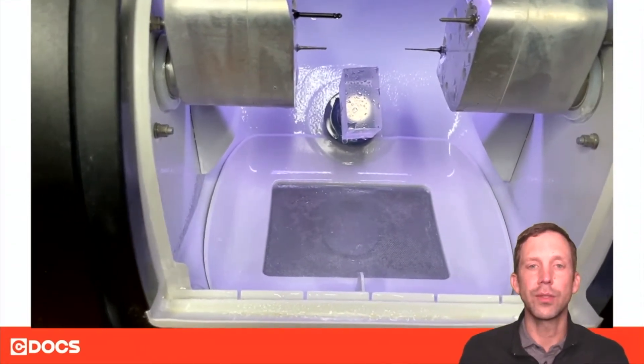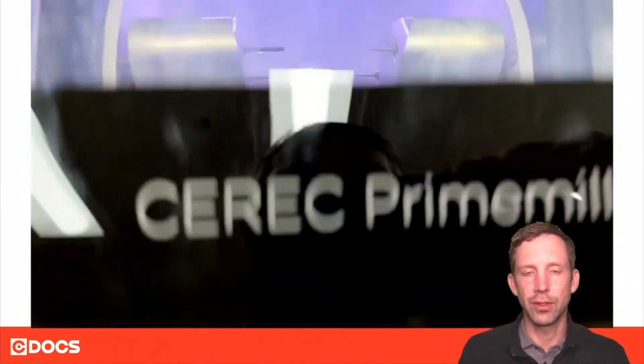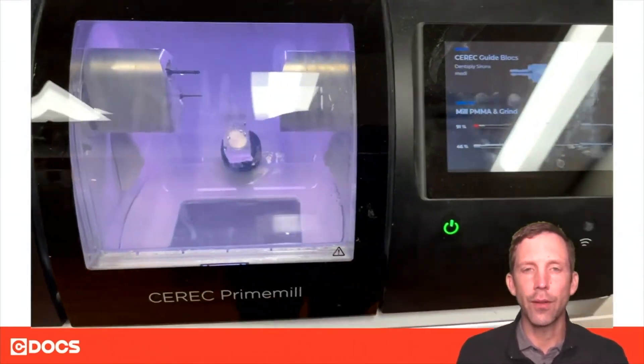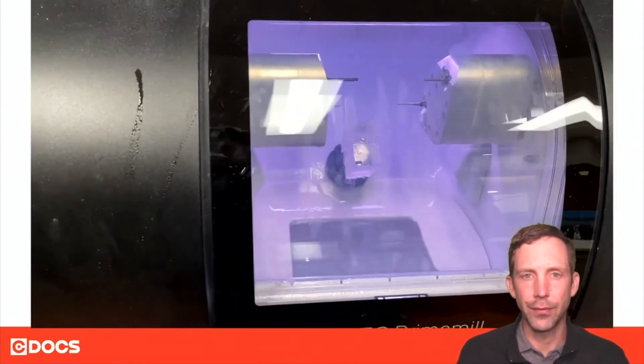We'll go ahead and close the milling chamber door and begin the process of milling the surgical guide. It's going to take roughly 25 minutes to mill the surgical guide in the Serac Prime Mill—pretty fast and efficient.